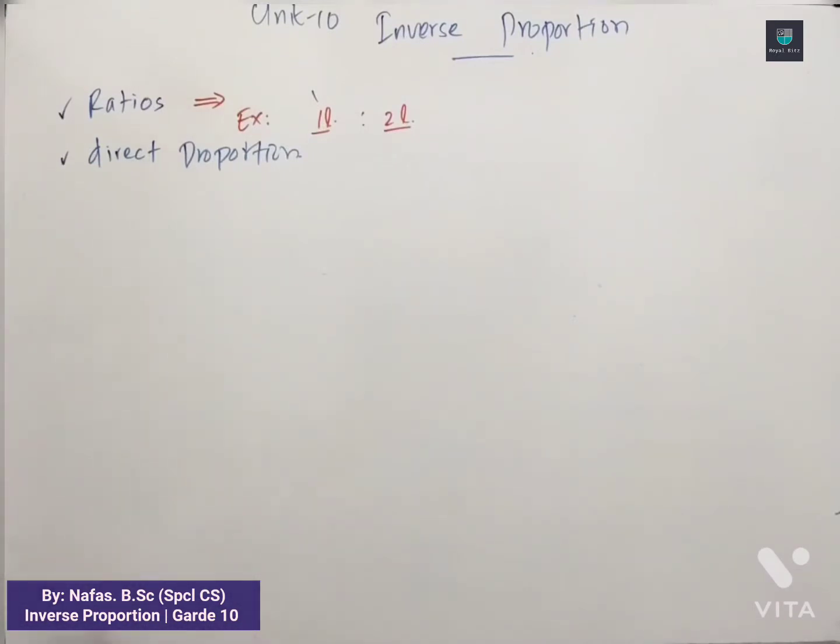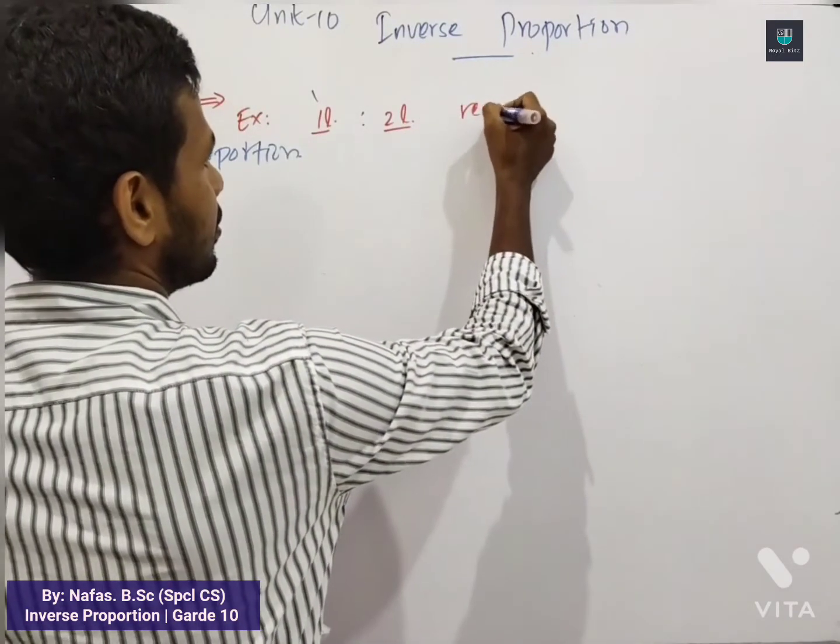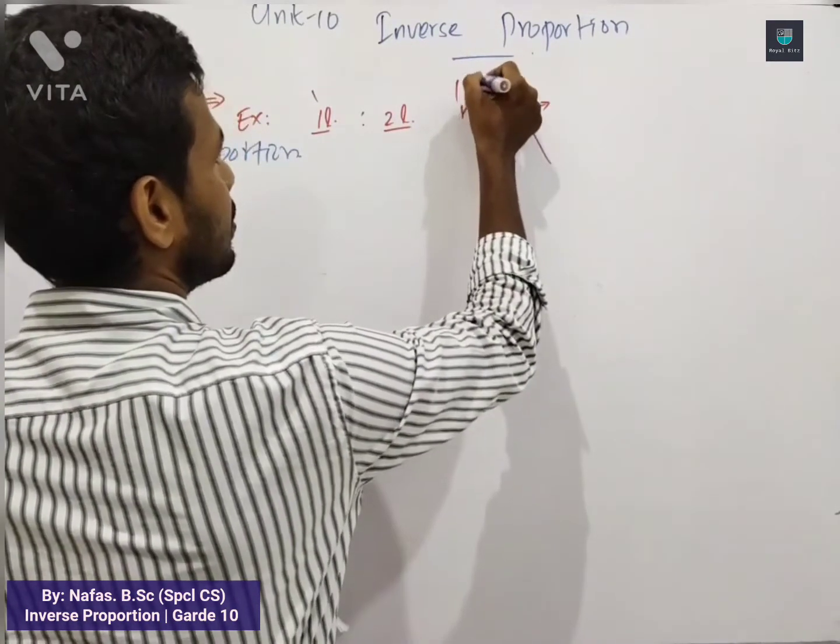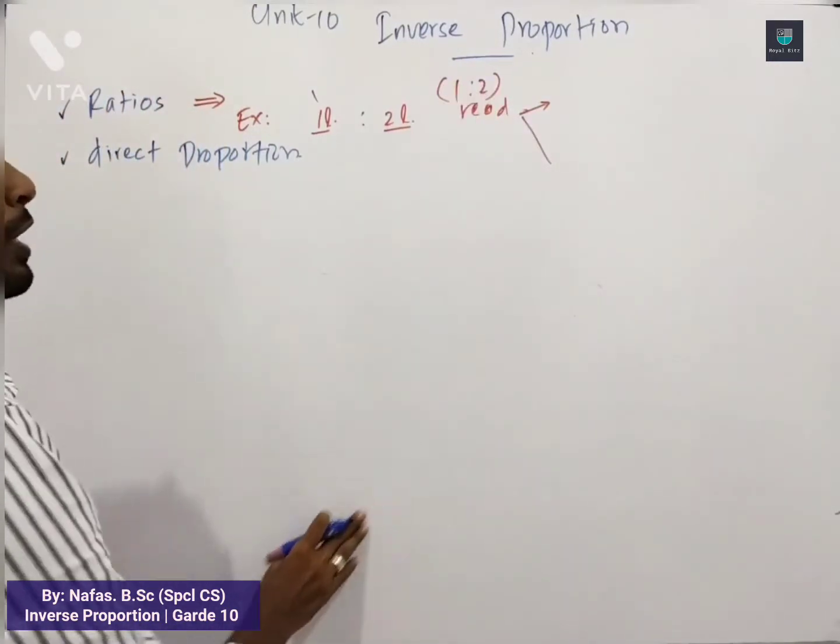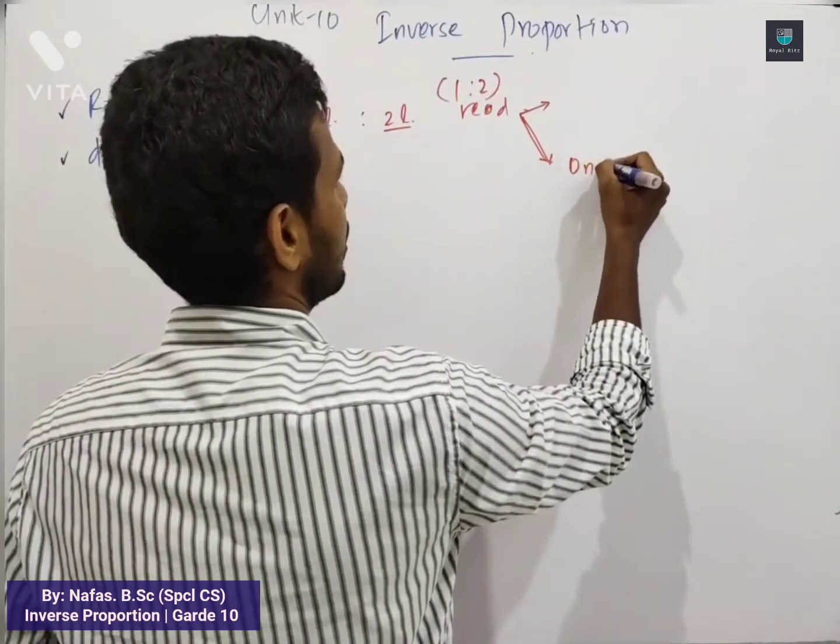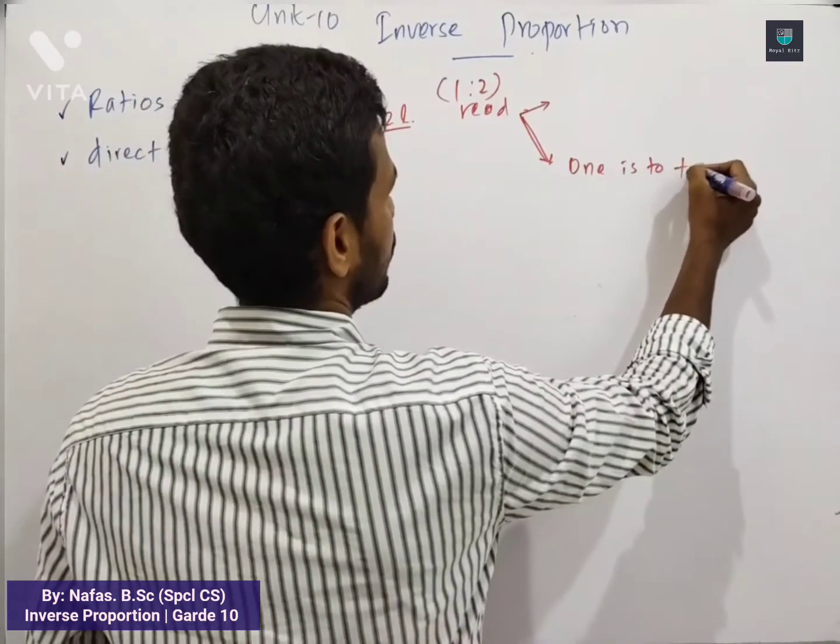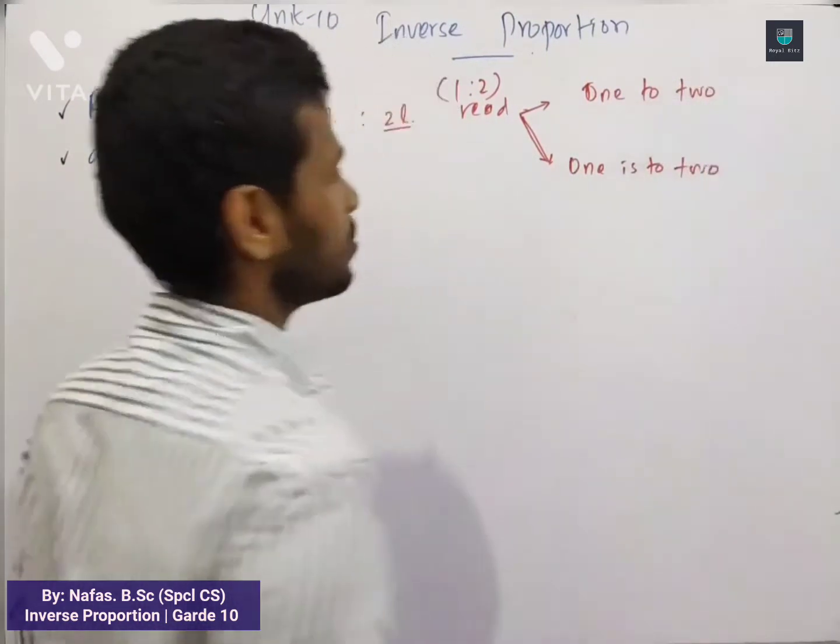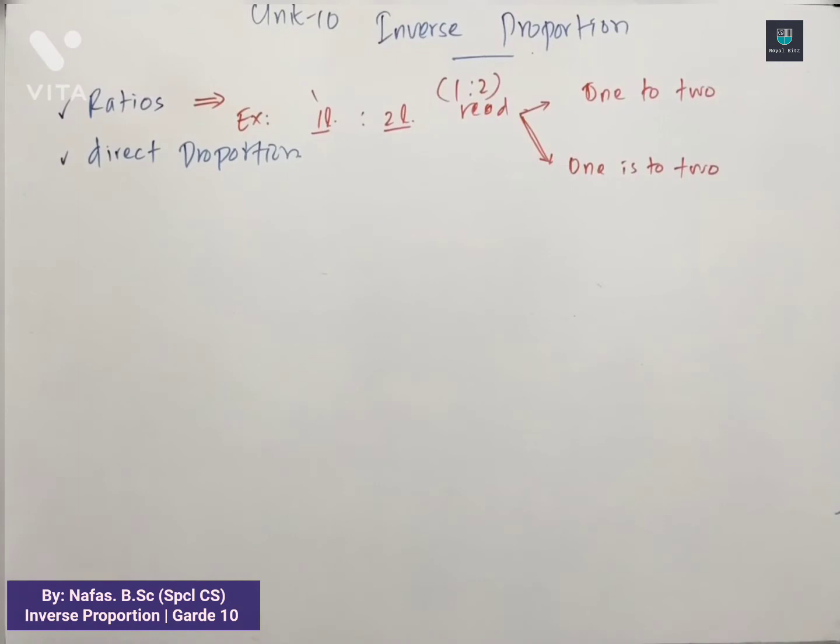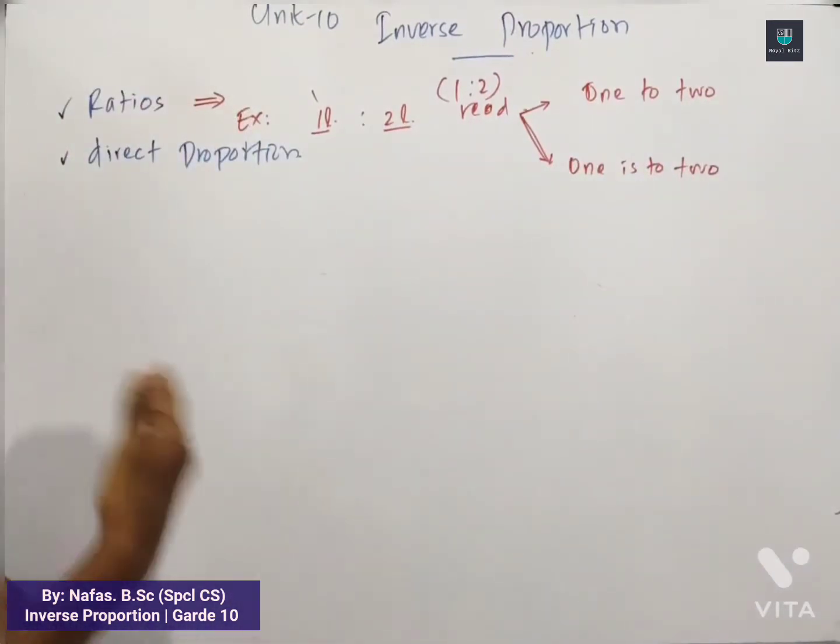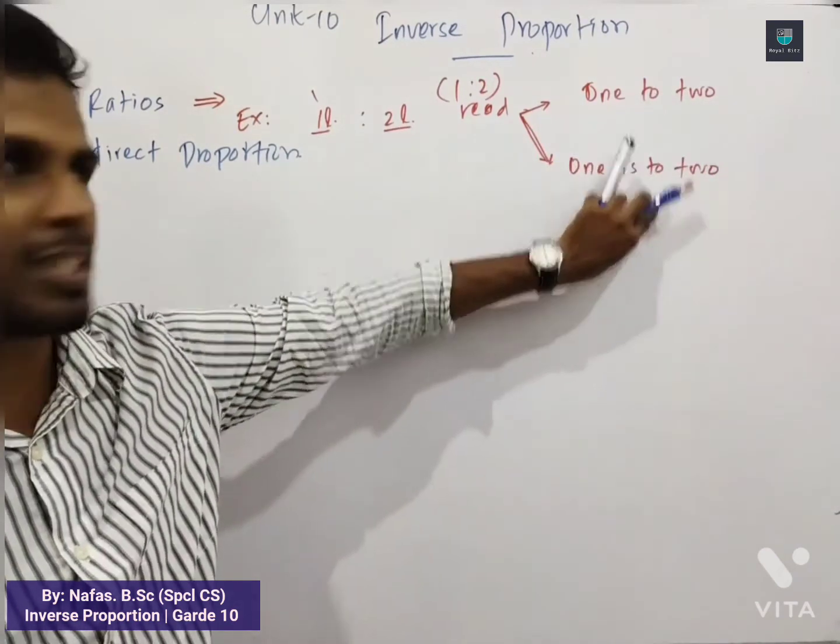We have two methods to read. The old one is, this can be read in two ways. The old one is 1 is to 2. The new one is 1 to 2. But still we use both ways. This is new, right?